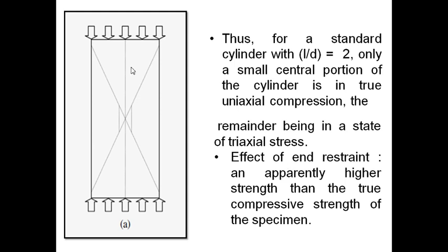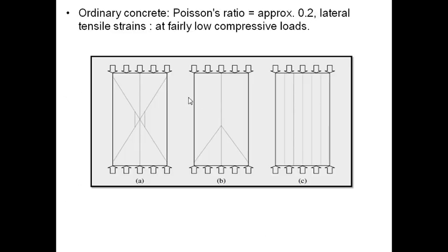The effect of end restraint is an apparently higher strength than the true compressive strength of the specimen. Because of the end restraint, it gives higher strength than the true compressive strength of the concrete specimen. For ordinary concrete, the Poisson's ratio is approximately 0.2. The lateral tensile strains are occurring at fairly low compressive loads. That could be the cause of failure, as shown in figure 3C.